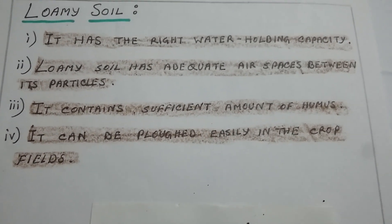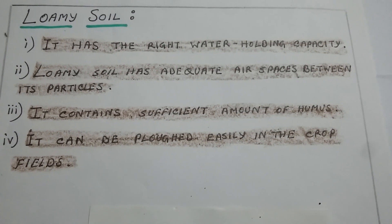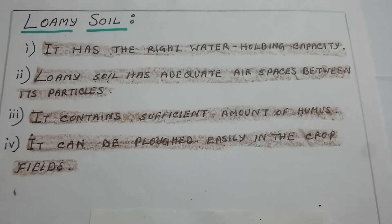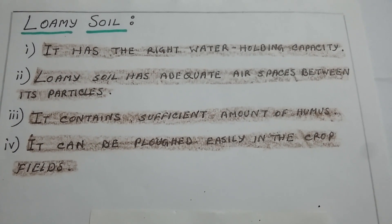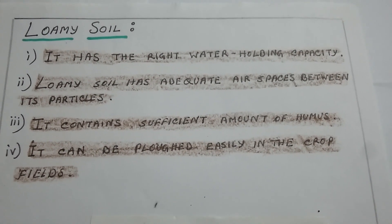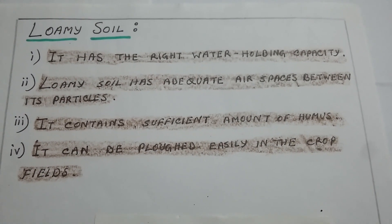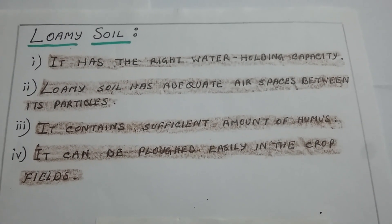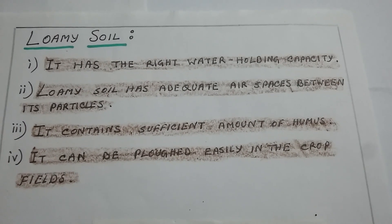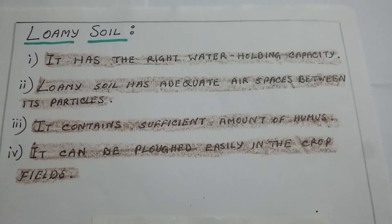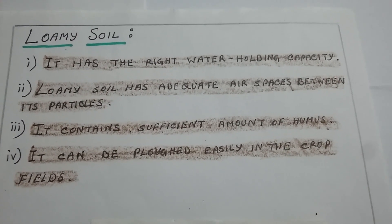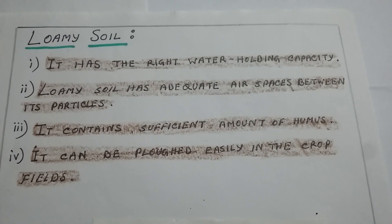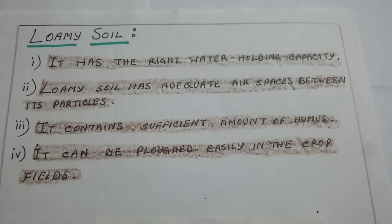Loam soil contains equal amounts of sand and clay, and also contains silt. It is mostly dark brown and appears slightly coarse. Loam soil is the base for growing crops.